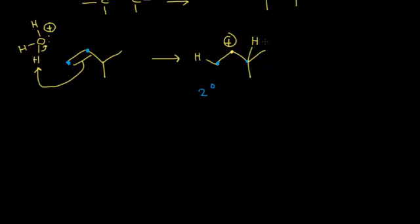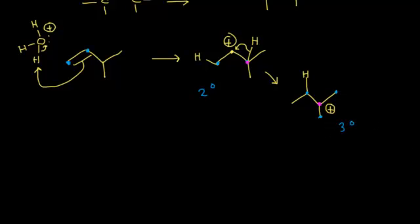Moving that hydrogen over takes a bond away from its original carbon, and the positive charge migrates to that carbon — which is now a tertiary carbocation. The formal charge moves to this carbon, which is bonded to three other carbons. Tertiary carbocations are more stable than secondary, so we get a hydride shift.